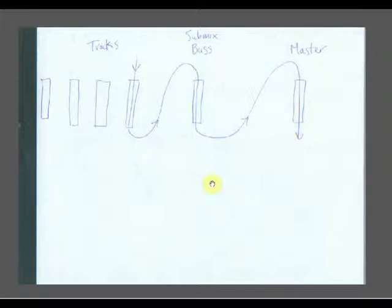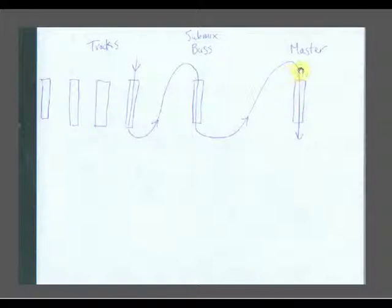Why would you use a submix bus for this? One reason is that it affects your processing order. If you don't have a submix bus, by default these are all routed to the master bus. Without the submix bus, you'd put a compressor on each individual track — the order of processing would be compressor, then summing at the master bus. But if you have a submix bus, the order of processing would be summing at the submix bus first, then compressor. So you're flipping around the summing and the compressor.